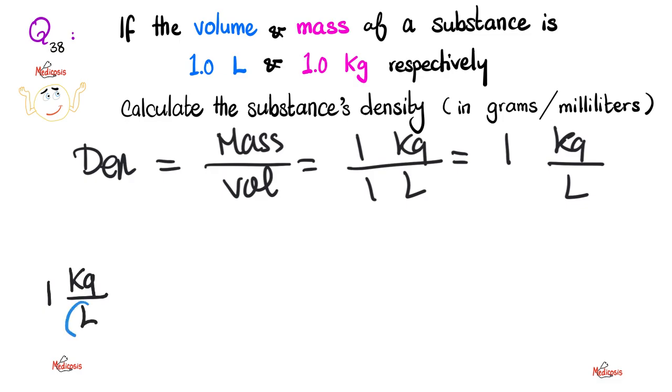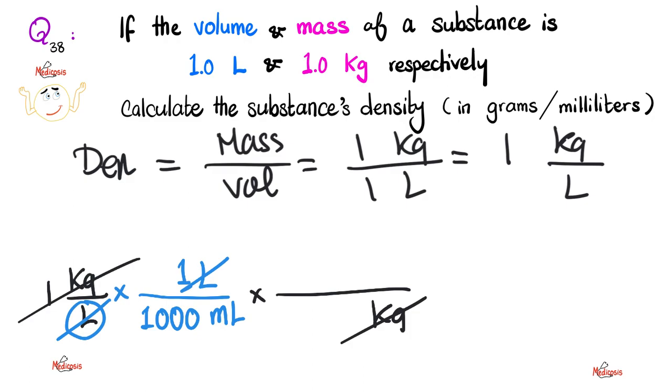Therefore, dimensional analysis time. I start with what I have. 1 kilogram per liter. I'm trying to cancel this liter with something. So let me put 1 liter upstairs. How many mls do you have here? I have 1000 mls. And I have successfully canceled those liters together. Now let's cancel the kilogram. So put it downstairs so that this kilogram can cancel with this kilogram. I know that 1 kilogram is 1000 grams. And then what? This 1000 will cancel this 1000.